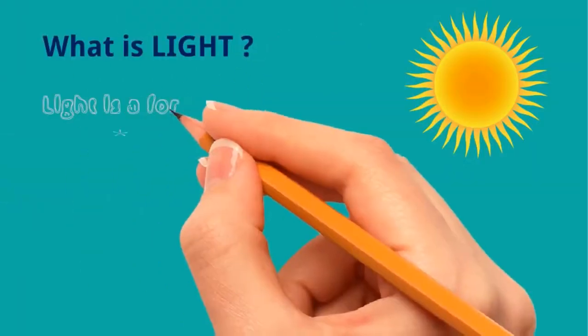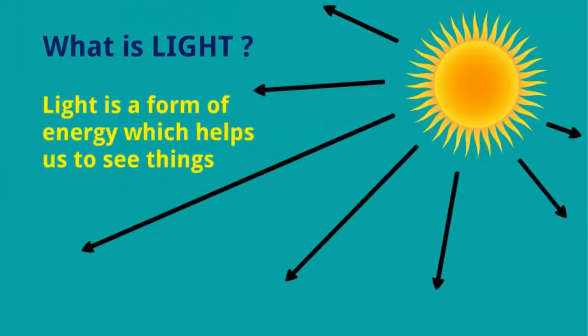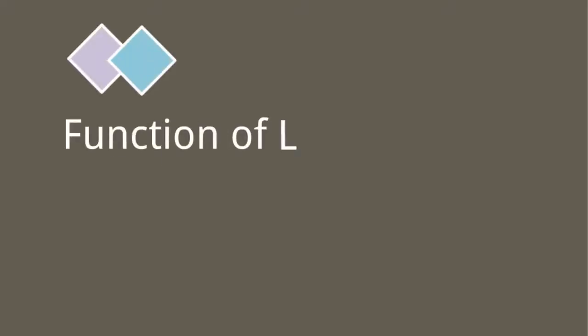So what is light? Light is a form of energy which helps us to see things around us. Function of light: we can see.